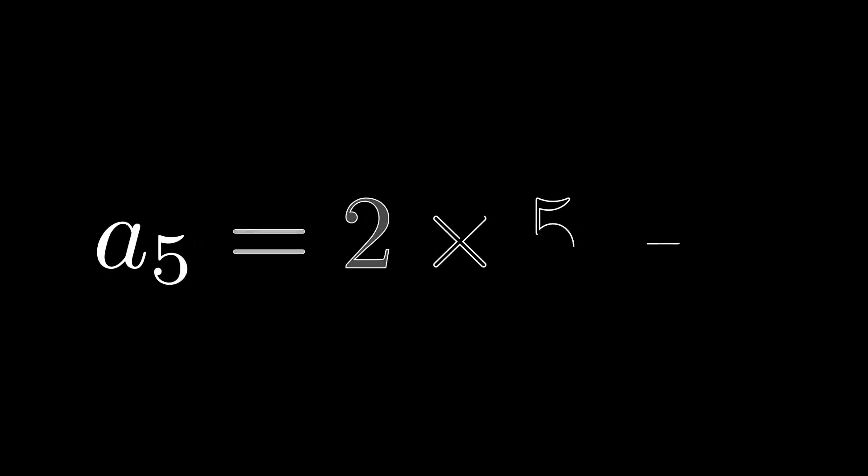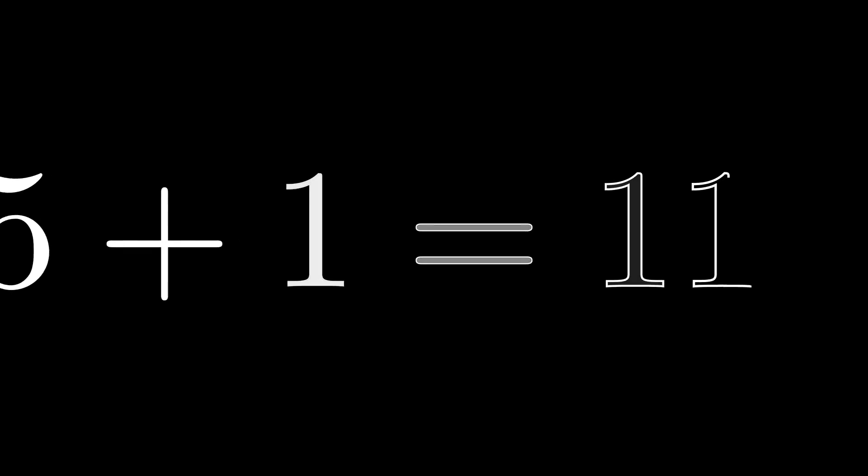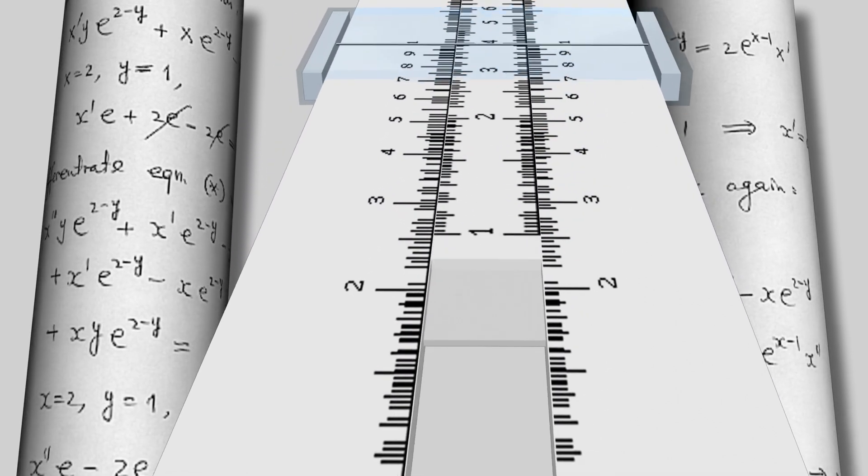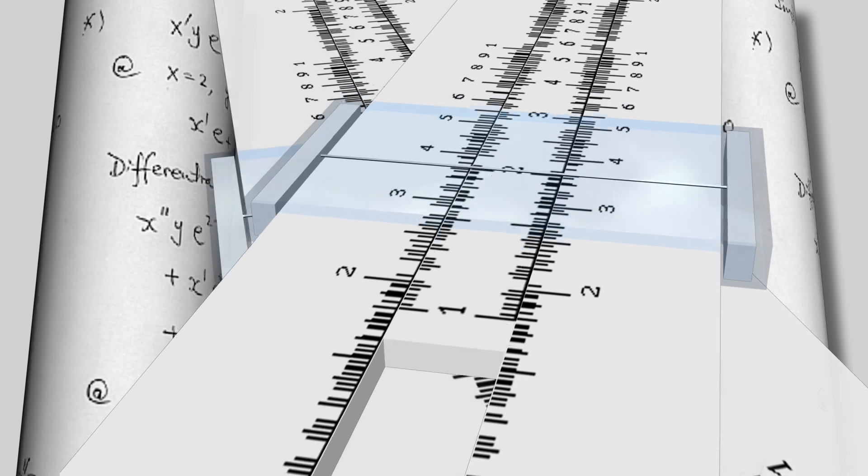For example, the direct formula for the sequence of odd numbers starting from one is a_n = 2n + 1. Using this formula we can calculate the value of any term by substituting its position n. For example, the fifth term is a_5 = 2(5) + 1 = 11. Direct formulas are useful because they allow us to easily calculate any term without computing all previous terms, and are commonly used in algebra and calculus.